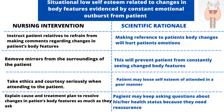The second nursing intervention is to remove mirrors from the patient's surroundings. This will prevent the patient from constantly seeing the changes in their body features. When there are mirrors all around, every time they turn left or right they see their body changing, which may hurt the patient's emotions and reduce their self-esteem.